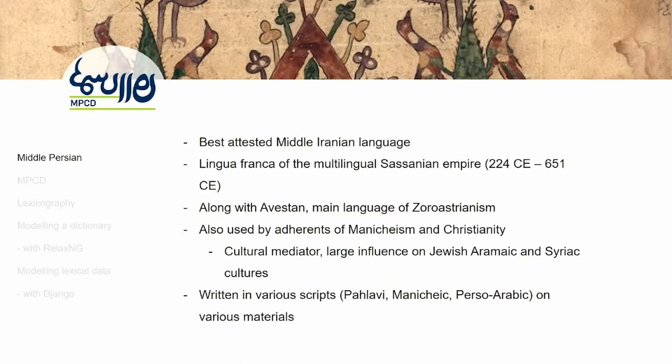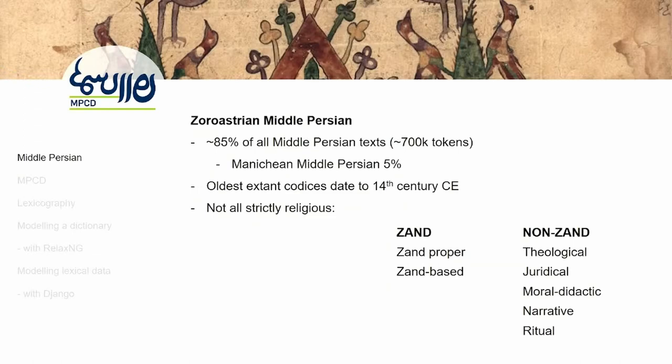The language was written in various scripts on various materials. In our project, we focus on the largest component — the Zoroastrian Middle Persian — which is about 85% of all Middle Persian texts, somewhere around 700,000 tokens. Not even a million — like a drop in the bucket compared to other languages.